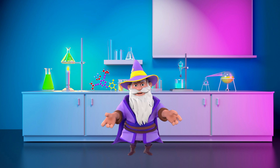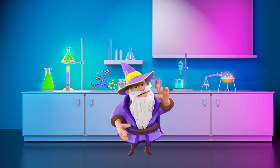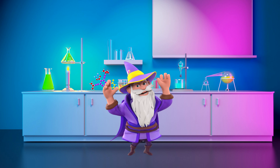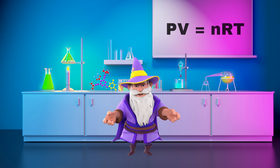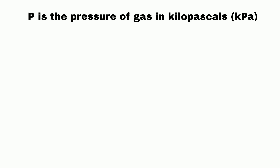The relationship among these quantities in an ideal gas is known as the Ideal Gas Law: PV equals nRT, where P is the pressure of the gas in kilopascals, kPa.